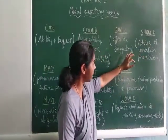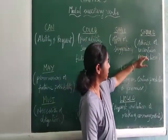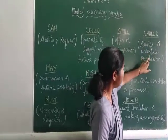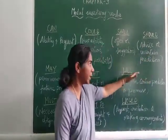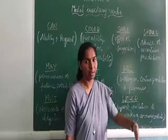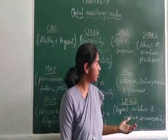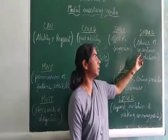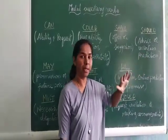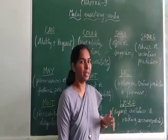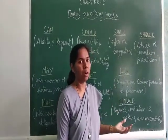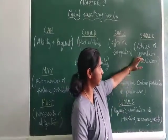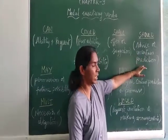The next one is 'should'. Should is the past form of shall. It is used for advising or uncertain prediction. A prediction is something that you guess will happen in the future, but it is uncertain — it might happen or may not happen. So should is used to express advice and uncertain predictions.